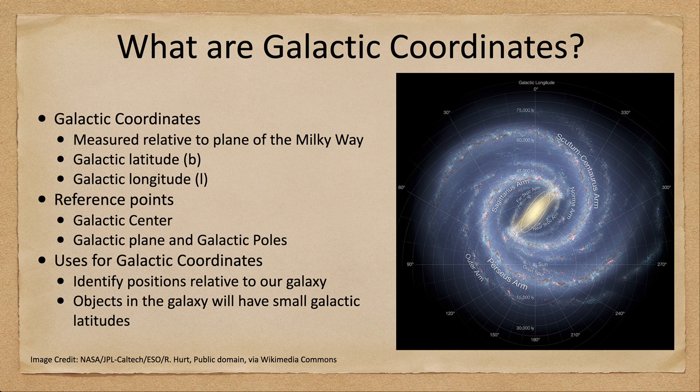What are galactic coordinates? The galactic coordinates that we look at are measured relative to the plane of the Milky Way galaxy. If you recall, we've used other different things as our standard, whether it be the celestial equator, which is the Earth's equator projected out, or things like the ecliptic, which is the apparent path of the sun.